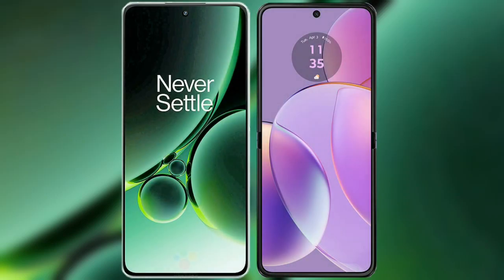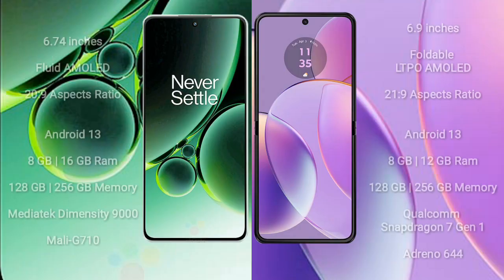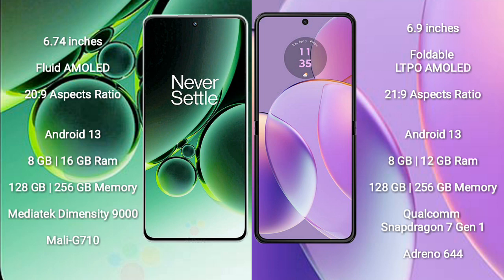I will compare the new OnePlus Nord 3 with Motorola Razr 40. OnePlus Nord 3 comes with a 6.74-inch flat AMOLED display and 20:9 aspect ratio. Motorola Razr 40 comes with a 6.9-inch foldable LTPO AMOLED display and 21:9 aspect ratio.